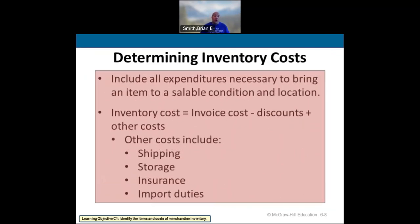So what do we do to determine how much inventory costs are assigned to our inventory? Our inventory costs are the actual physical inventory we have, minus any discounts, returns, and allowances. Then we add in any other costs it took to get our inventory into a sellable condition. That may include shipping, storage, taxes, sales tax, insurance, import duties or tariffs — anything it takes to get the inventory into a workable, sellable condition.